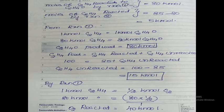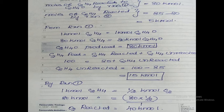We have five components to calculate. First, ethylene oxide produced — our main product. As per reaction 1, 1 kilomole of ethylene produces 1 kilomole of ethylene oxide. Since 80 kilomoles of ethylene reacted, ethylene oxide produced = 80 × (1/1) = 80 kilomoles. The first component is complete.